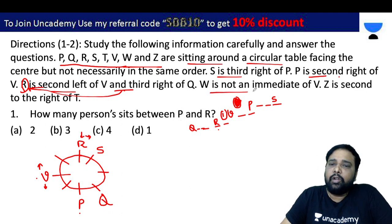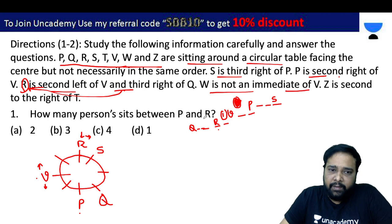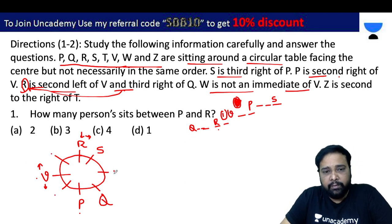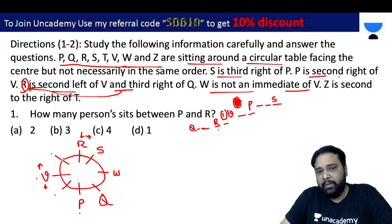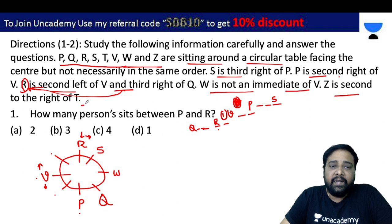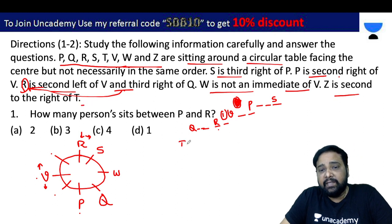W is not an immediate neighbor of V. Z is second right of T. So from T's right side, the 2nd position is Z.